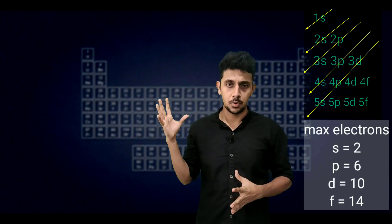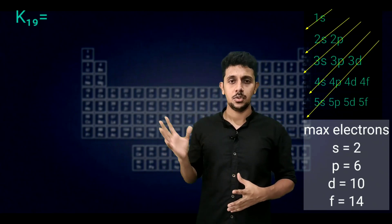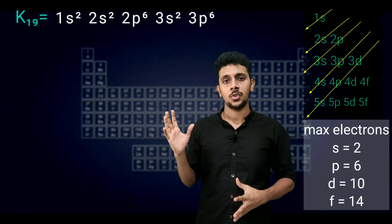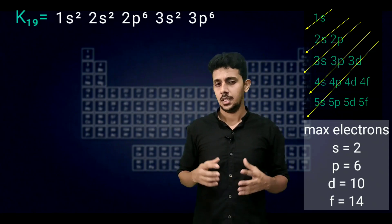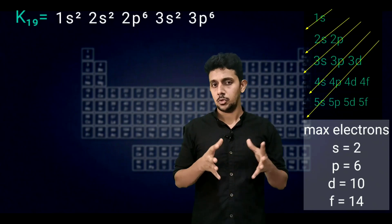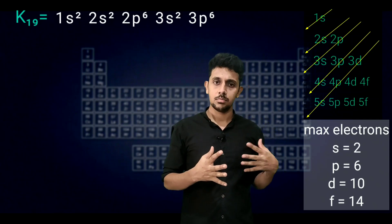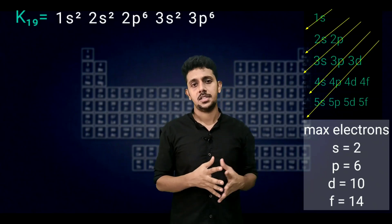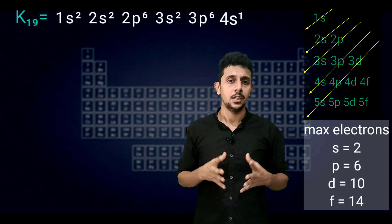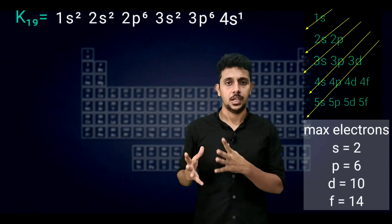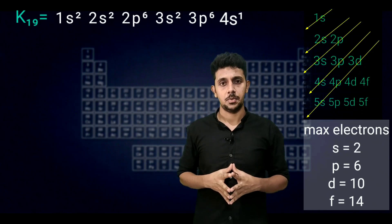Let's move to another example: potassium, atomic number 19. It consists of 19 electrons. The subshell configuration is 1s2, 2s2, 2p6, 3s2, 3p6 — that is 18 electrons — and then 4s1.